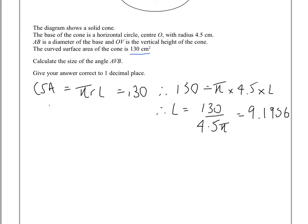is that the sine of our angle, let's just call it X for now, is equal to the opposite, which is 4.5, over the hypotenuse, which is 9.1956.